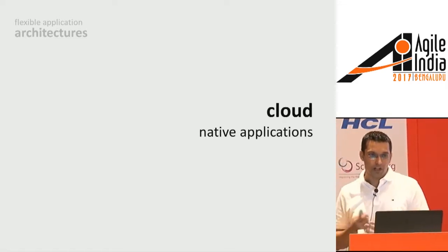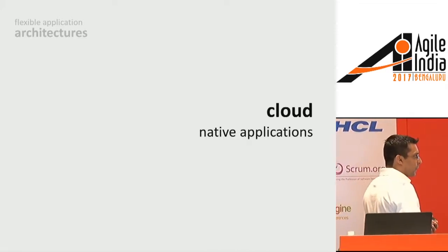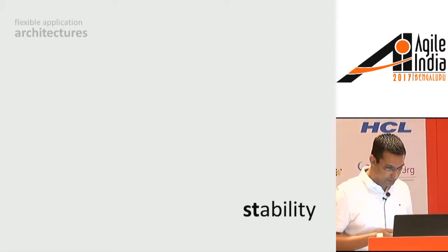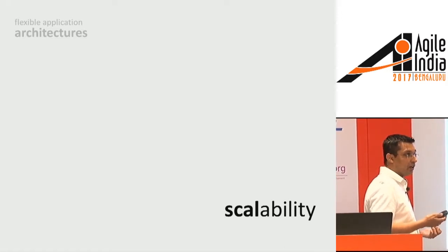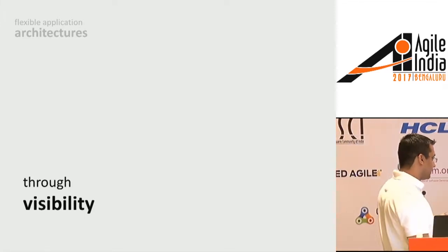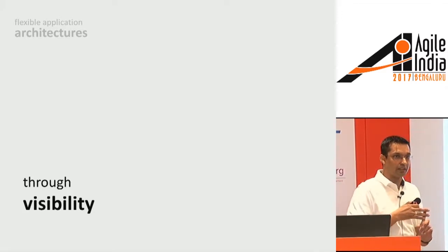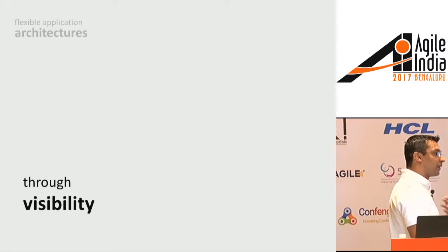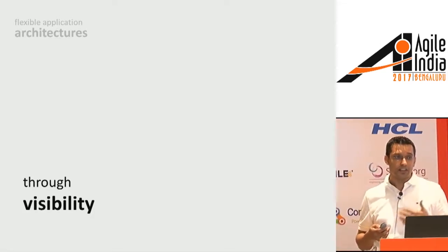It is only evolution — first monolithic, then SOA, and now cloud native applications. Cloud native applications help you tackle these pain points. They help you deliver changes at great speed; the speed, stability, availability, and scalability requirements are all taken care of by cloud native applications. Now, I have an application in production. The key thing is visibility — whenever there is an error or exception happening in the system, if I can get that visibility in real time I can take corrective action, or I can build my platform to be more intelligent to take corrective actions on its own. That is what we talk about with self-healing processes.